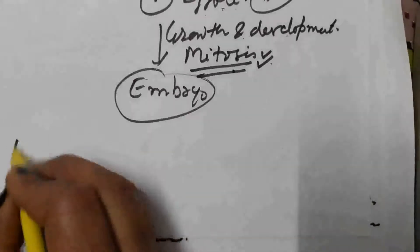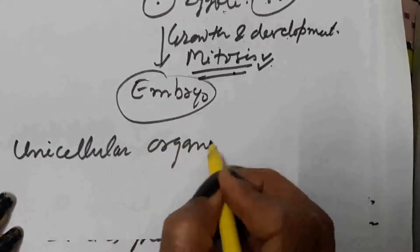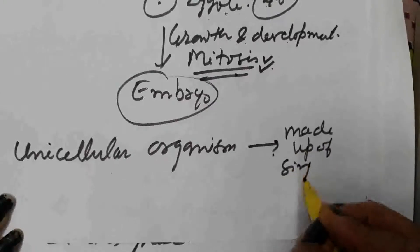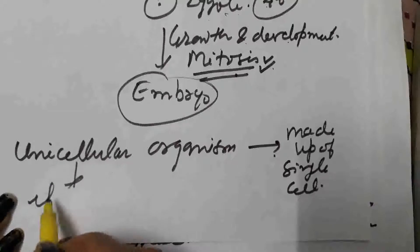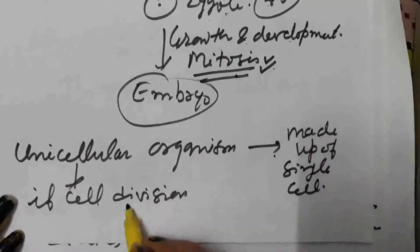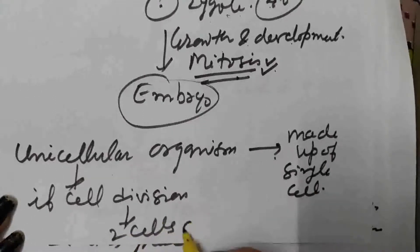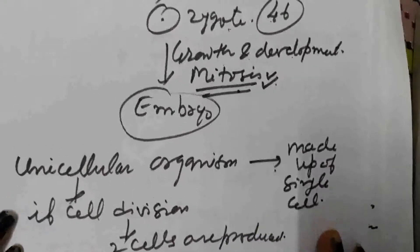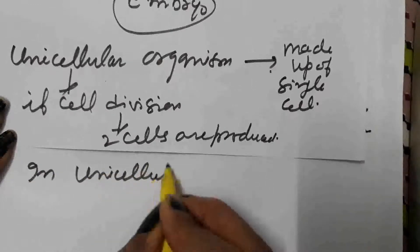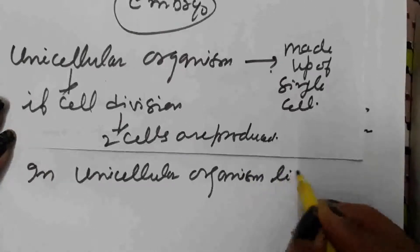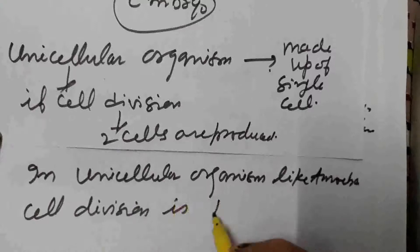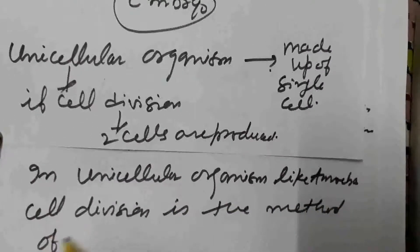What happens in the case of unicellular organisms? Unicellular organisms are made up of a single cell. If cell division takes place in a unicellular organism like amoeba, then two cells are produced. It means that in unicellular organisms like amoeba, cell division is the method of reproduction.